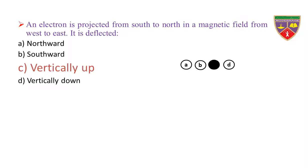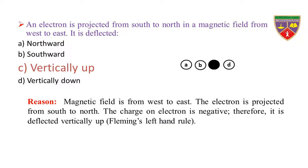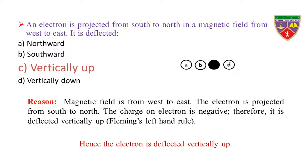Therefore, the correct option is C. Reason: Magnetic field is from west to east. The electron is projected from south to north. The charge on the electron is negative. Therefore, by Fleming's left-hand rule, it is deflected vertically up. Hence, the electron is deflected vertically up.